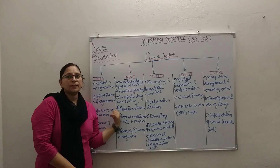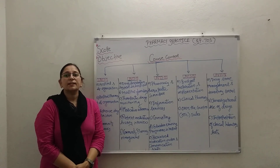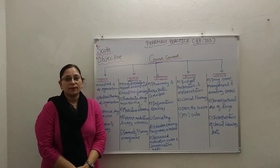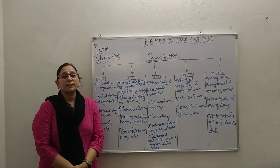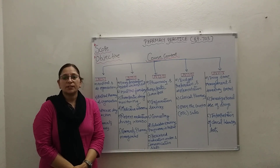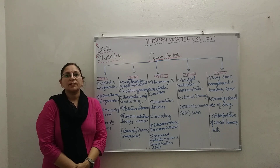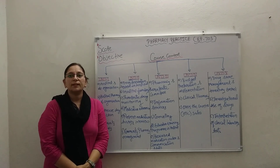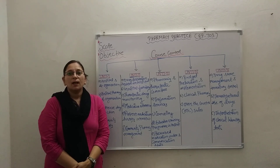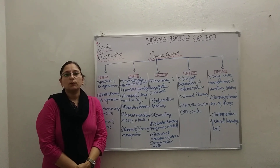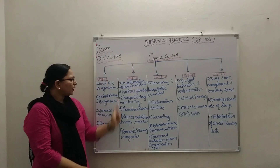The third topic is adverse drug reactions, including classification of adverse drug reactions, excessive and secondary pharmacological effects, idiosyncrasy, allergic drug reactions, toxicity, and drug interactions. The fourth and last topic of Unit 1 is community pharmacy, covering organization and structure of retail and wholesale drugstores, types and design, dispensing of proprietary products, and maintenance of records of retail and wholesale drugstores.